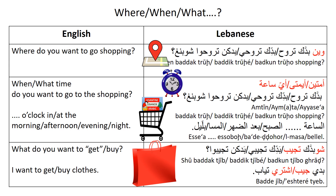Another example: 'as-saaa tlaate baad az-zuhr' — 3 o'clock in the afternoon; 'baad az-zuhr' means afternoon. 'As-saaa sitt al-masa' — 6 o'clock in the evening. 'As-saaa tisaa bil-leil' — 9 o'clock at night.